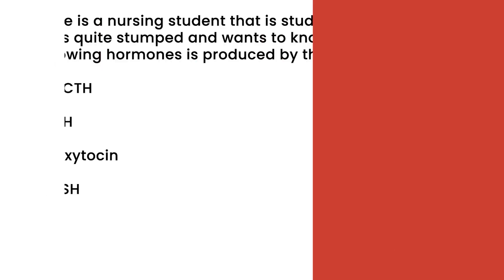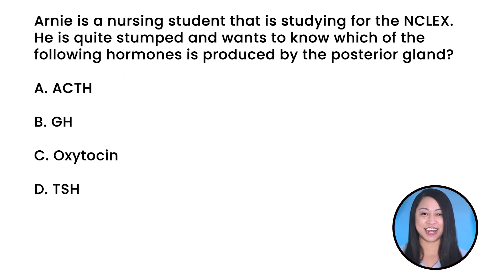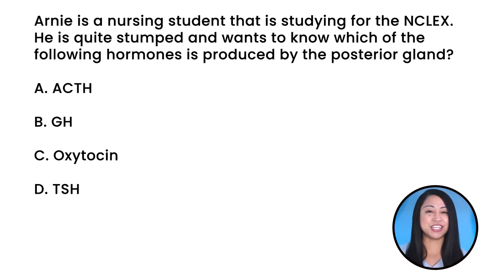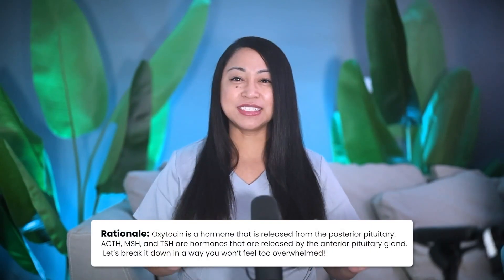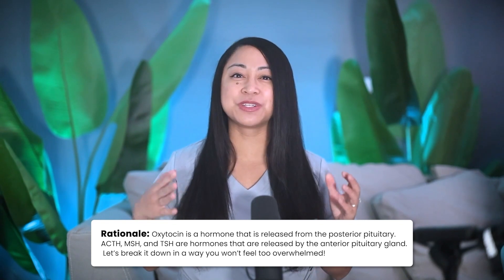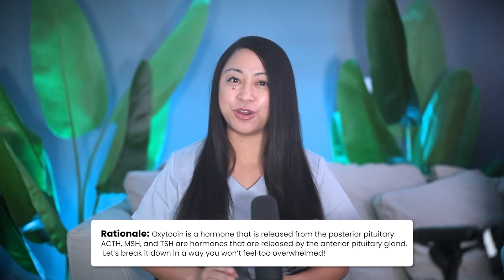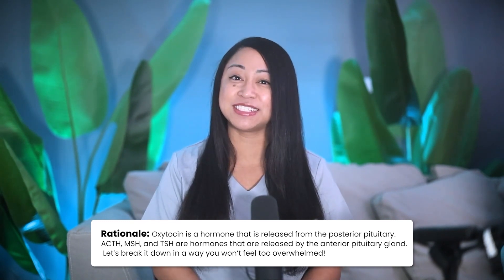Quick NCLEX pop quiz! Arnie is a nursing student studying for the NCLEX. He wants to know which of the following hormones is produced by the posterior gland. A: ACTH, B: GH, C: Oxytocin, or D: TSH. And the correct answer is C, Oxytocin. Rationale: Oxytocin is a hormone that is released from the posterior pituitary. ACTH, MSH, and TSH are hormones that are released by the anterior pituitary gland.